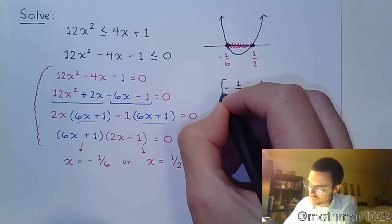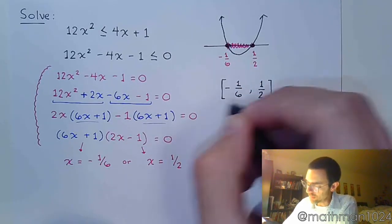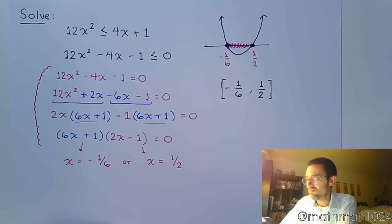And because it says equal to, that means these guys will be filled in. And from there, we can go straight to our solution set. So we're going from negative 1 sixth to positive 1 half. Since we are including both ends, we do brackets on both ends. And that's it. So as long as you know your shape, you find those critical values, and you know whether you need to be above or below the x-axis.